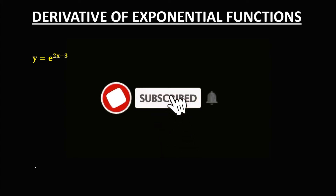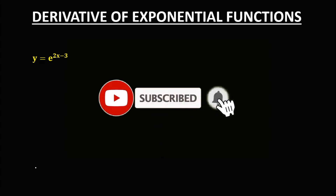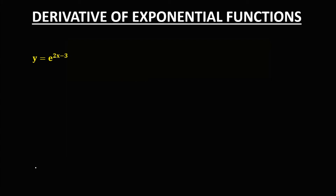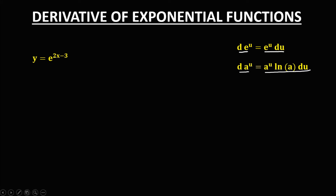Okay, so let's have this topic: finding the derivative of exponential functions. These are the formulas to find the derivative of exponential functions. For the derivative of e to the power u, that's e to the power u times the derivative of u. And for a to the power u, that's a to the power u times ln a times the derivative of u.